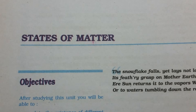A relationship can be obtained between density and pressure of a gas by using Boyle's law. By definition, density D is related to mass m and volume V by D = m/V. Substituting the value of V from Boyle's law equation gives D = m/K₁ × P = K' × P. This shows that at constant temperature, pressure is directly proportional to the density of a fixed mass of gas.